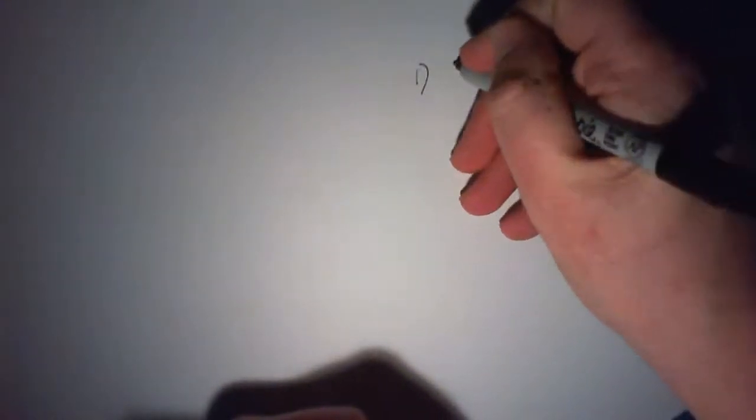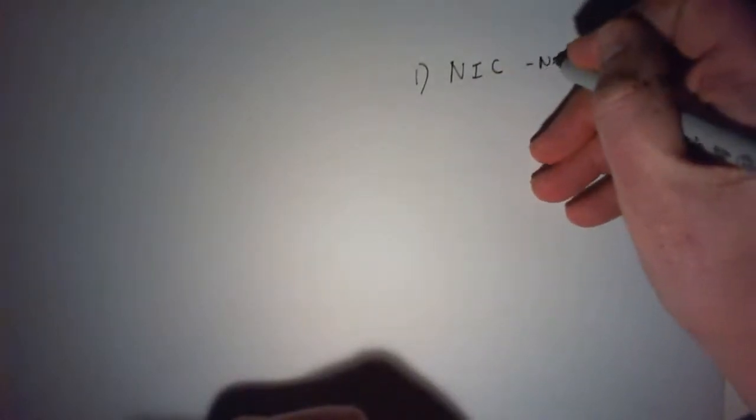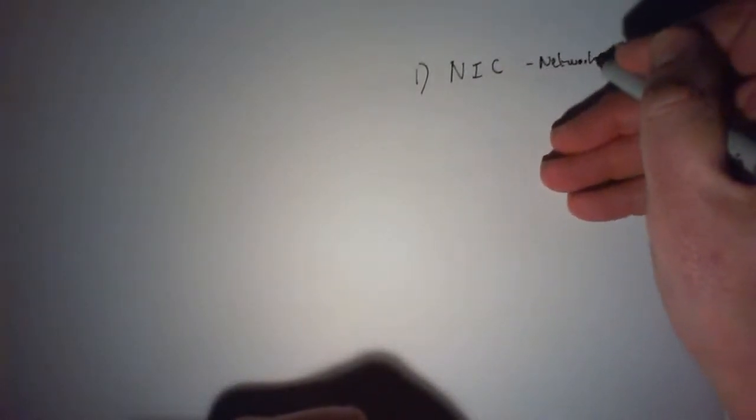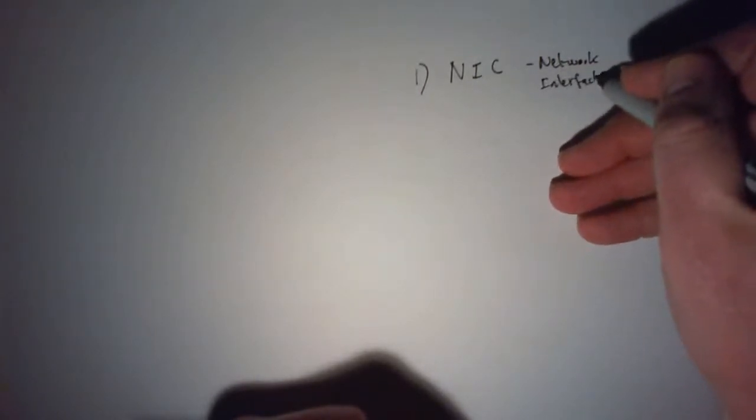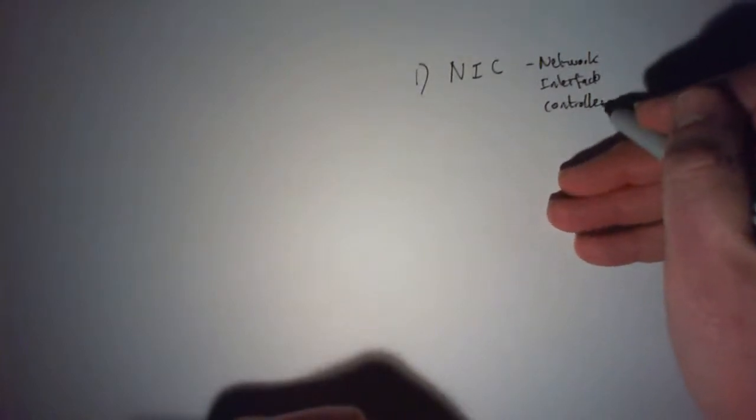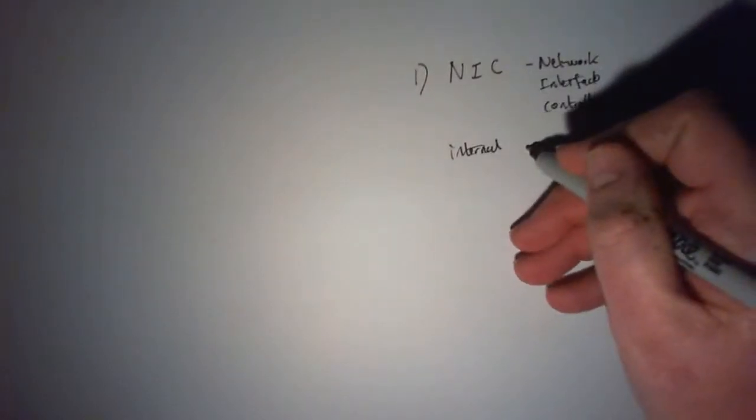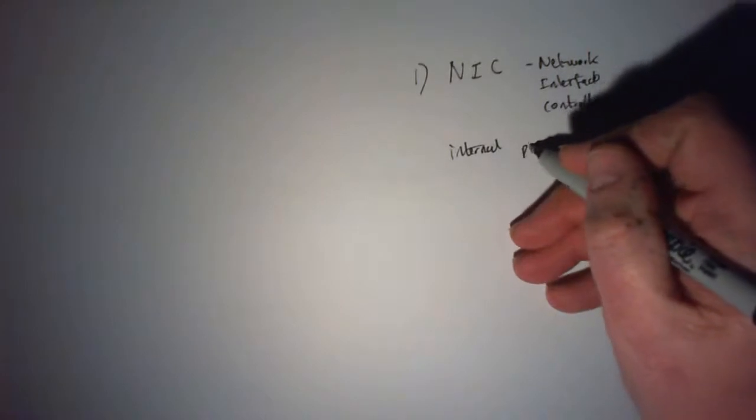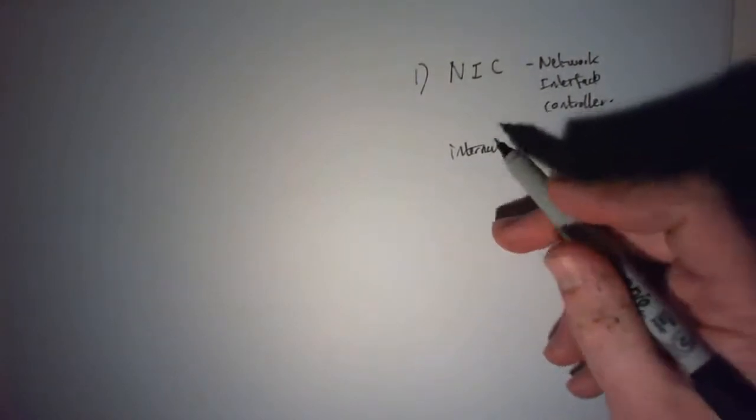The first piece of hardware that every device needs is what's called an NIC, which is a Network Interface Controller. Basically what it is, it's an internal piece of kit, an internal piece that allows any device to connect to the network.